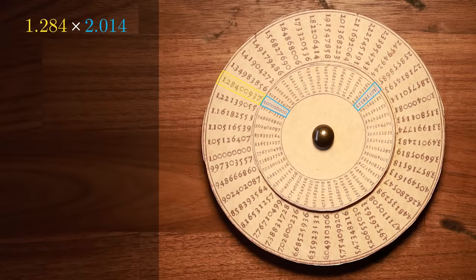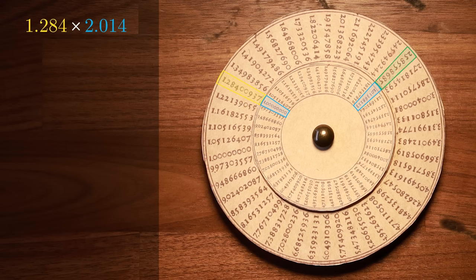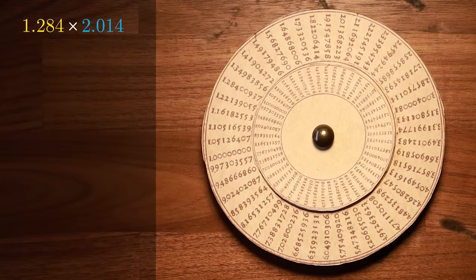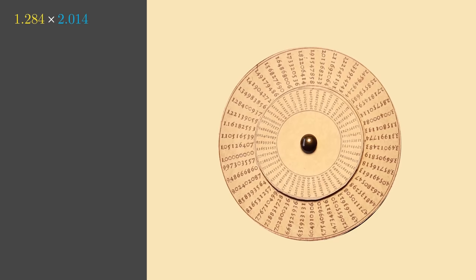We then find the closest number to 2.014 on our inner ring, and see where this lines up against our outer ring. Looks like it's closest to 2.586, which is the correct answer.